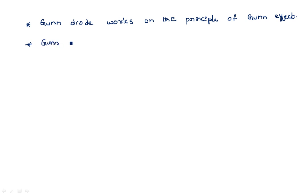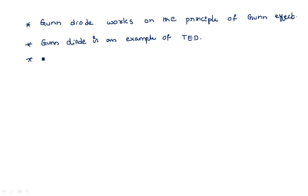The Gunn diode is an example of a transferred electron device. It is actually in the form of a normal PN junction diode, but it exhibits negative resistance characteristics. As I told you, the transferred electron device properties we have studied are all applicable to this Gunn diode because it is an example of the TED.